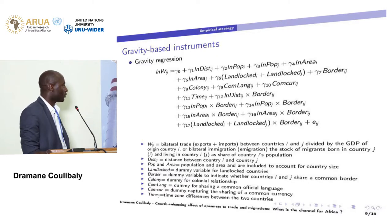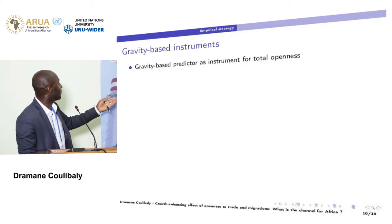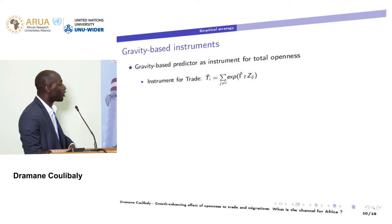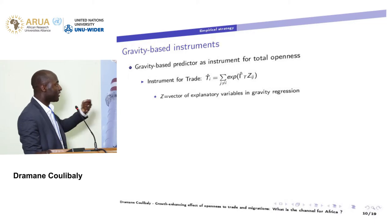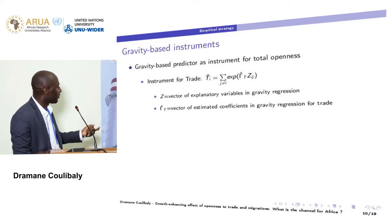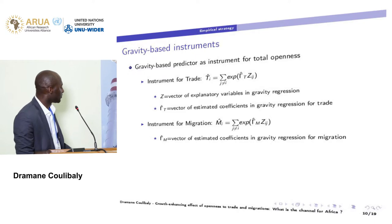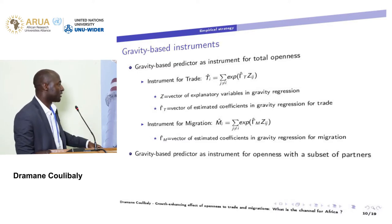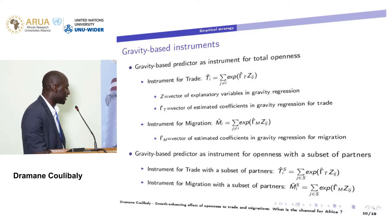After estimating the gravity regression, we compute gravity-based instruments. The gravity-based predictor for total openness is given by summing over all partners of country i, where Z is the vector of explanatory variables in the gravity regression and gamma is the vector of estimated coefficients for trade. We do the same for immigration. For the subset of partners, we sum only over that subset, doing the same for both trade and migration.